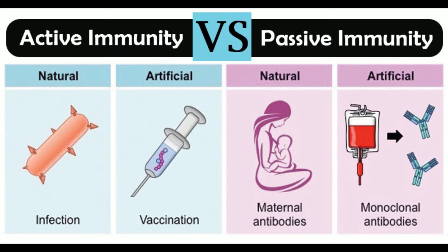Adaptive immunity can be classified into active immunity and passive immunity. Difference 1 — Definition: Active immunity is the protective immunity in which the individual's own immune system is stimulated to produce antibodies and lymphocytes. Passive immunity is the immunity in which a person receives antibodies or lymphocytes that have been produced by another individual's immune system. Difference 2 — Exposure to antigen: Active immunity requires exposure to a pathogen or to the antigen of a pathogen, while passive immunity does not require exposure to an infectious agent or its antigen.